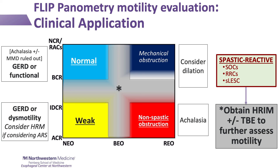If there is reduced EGJ opening but secondary peristalsis is present such that achalasia appears unlikely, this may reflect a potential subtle mechanical obstruction. Given that the FLIP is performed during endoscopy, this can prompt an immediate second look endoscopically for a potentially missed subtle stricture and may warrant considering dilation. Recognizing that this does leave some gray areas — such as with borderline EGJ opening — additional testing with manometry and/or esophagram is generally warranted.